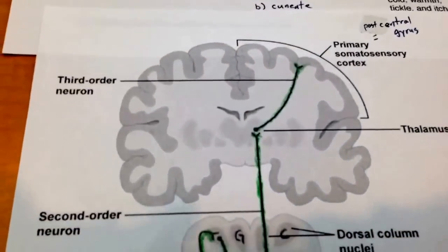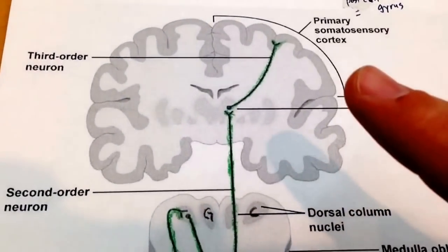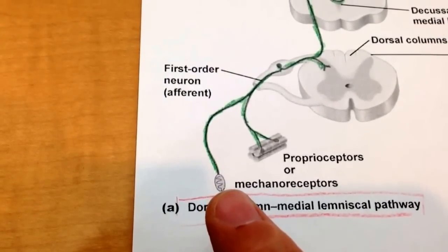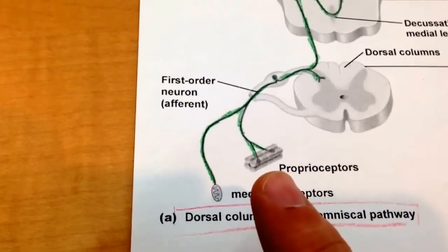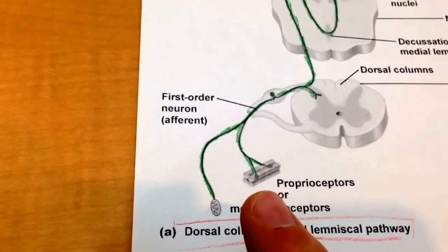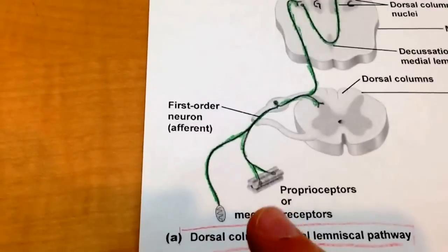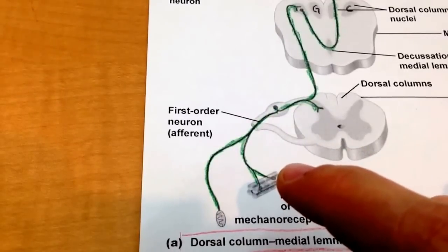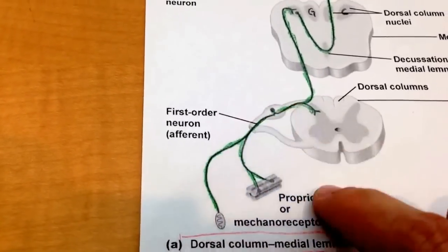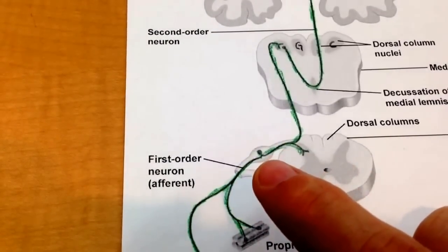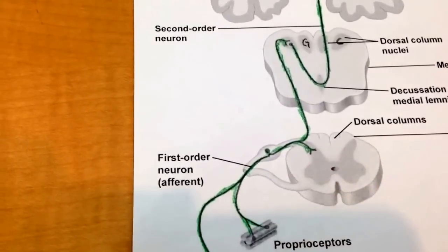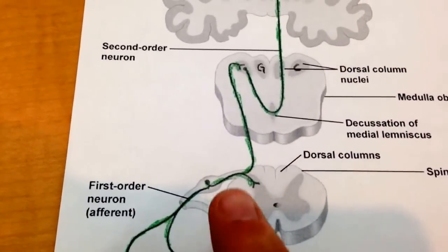The next tract is called the dorsal column medial lemniscal tract, or system. It doesn't start up in the brain — it starts down in the body. The dorsal column medial lemniscal pathway begins with mechanoreceptors or proprioceptors, so it sends sensory information up to the brain. It can send vibration, conscious proprioception, and discriminative fine touch. These afferent neurons enter through the dorsal root entry zone — entering in the back — with the cell body in the dorsal root ganglia.